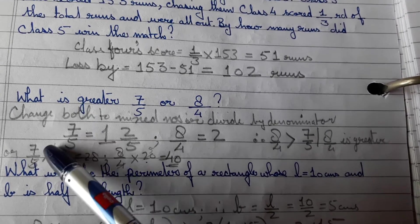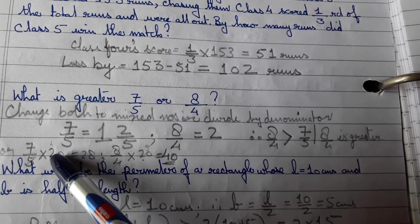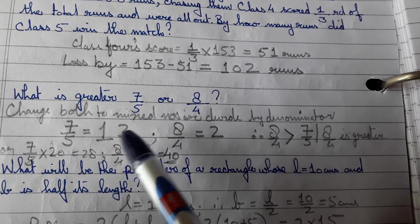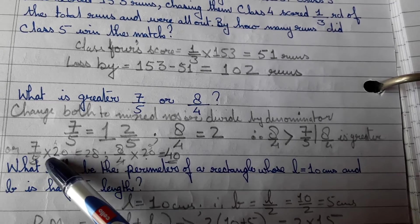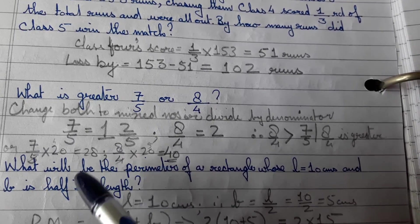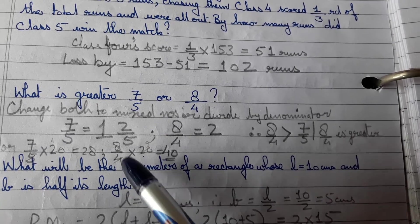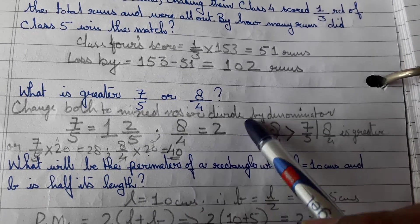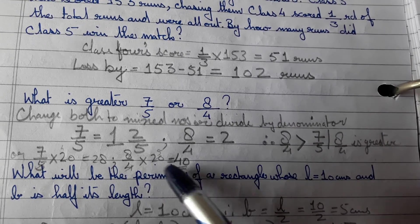Also, you can take another number, any number, and find 7 fifths of it. The same number will be used to find 8 fourths also. So I am taking 20. 5 fourths are 20, 7 fifths into 4 is 28. And 8 by 4 into 20, 4 fifths are 28, 5 fifths are 40. So 8 by 4 clearly is bigger. So you can follow either of the methods.